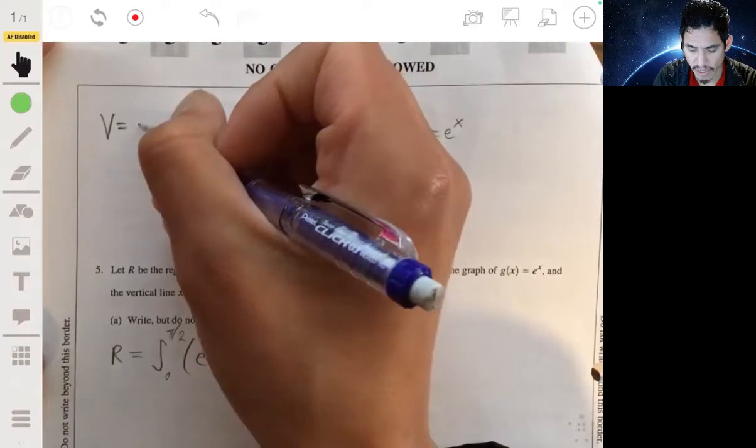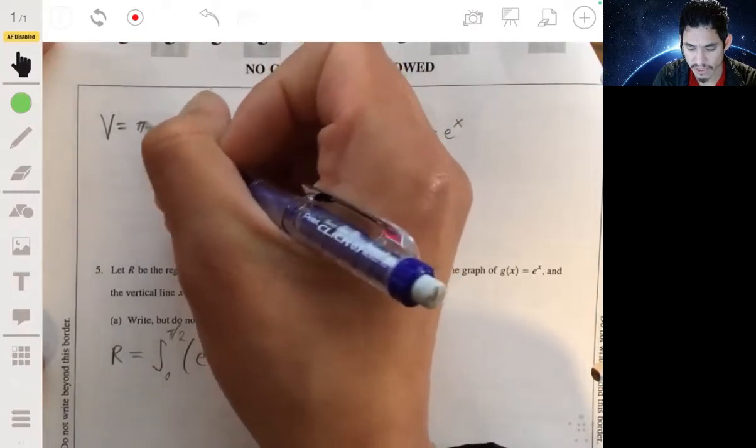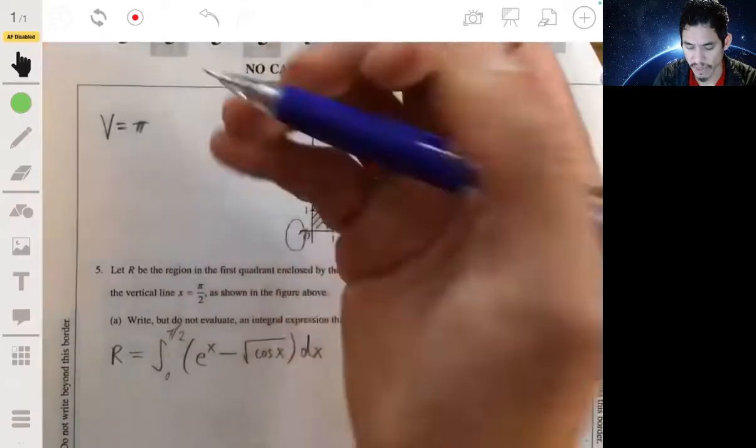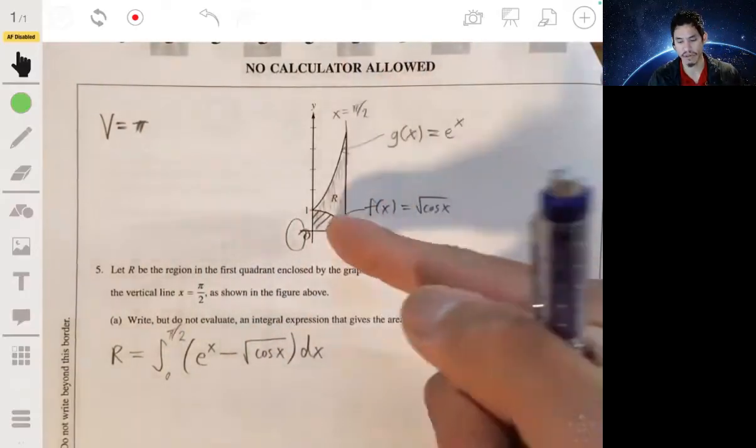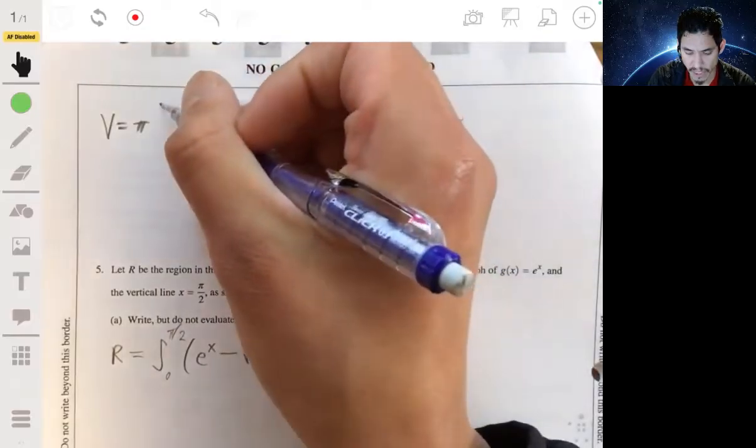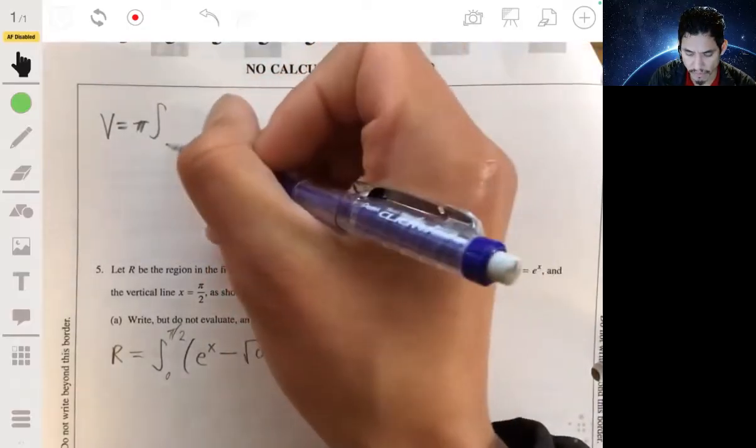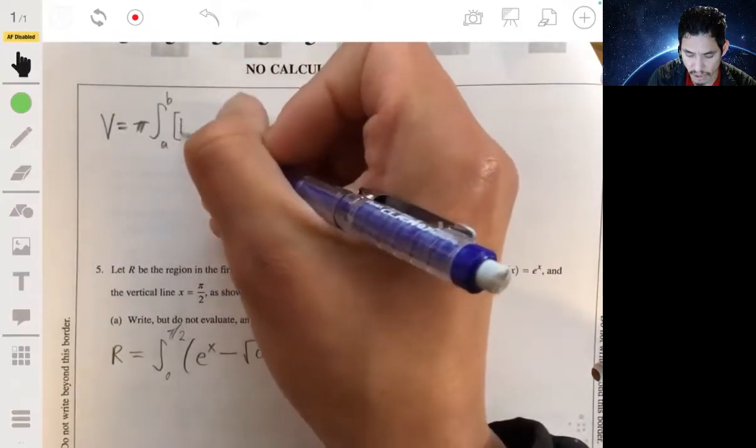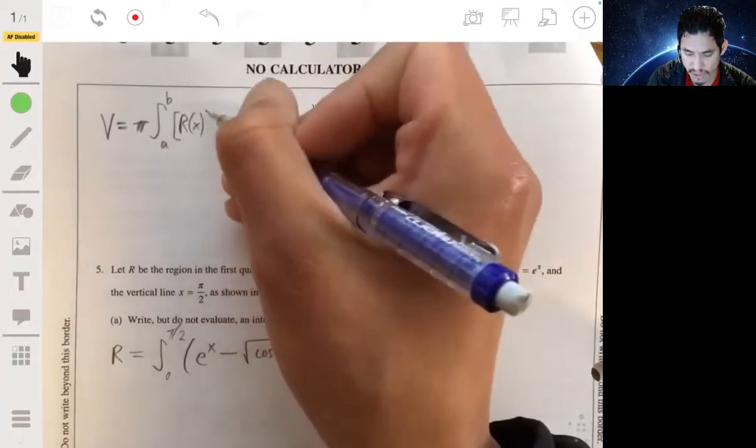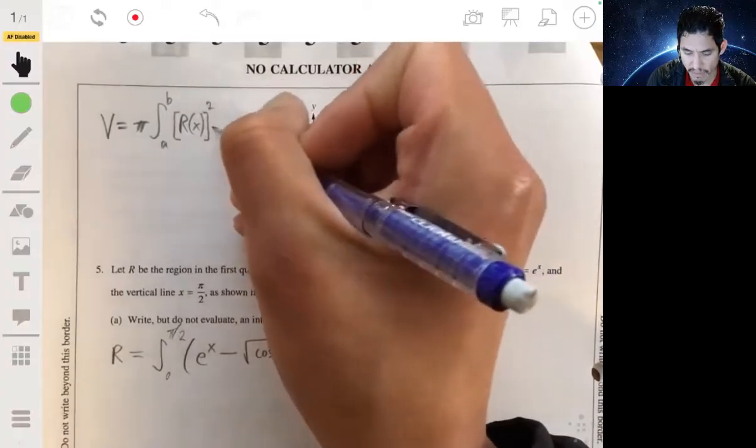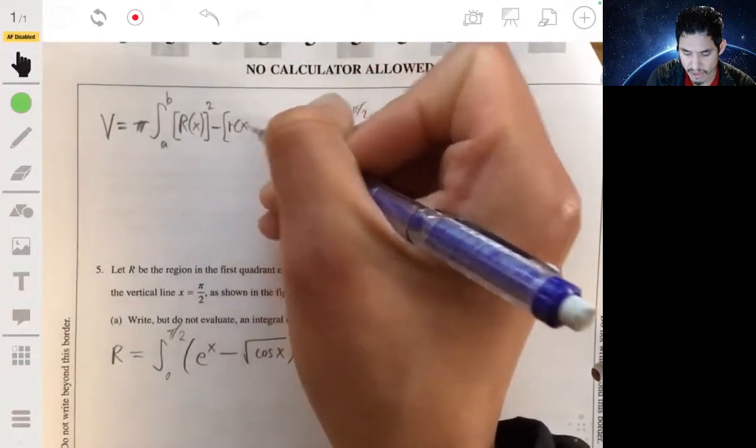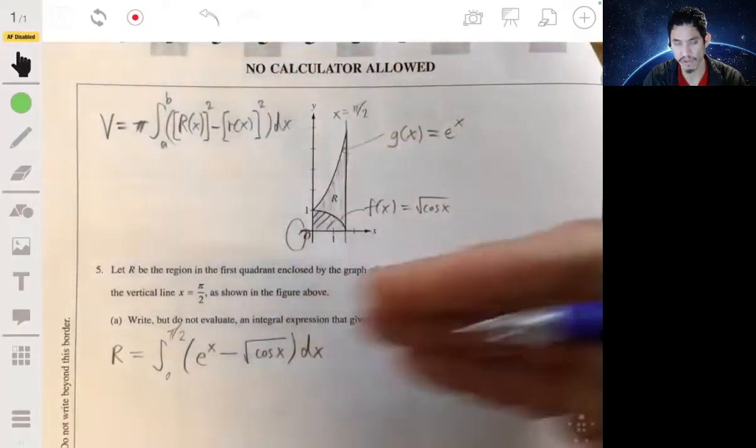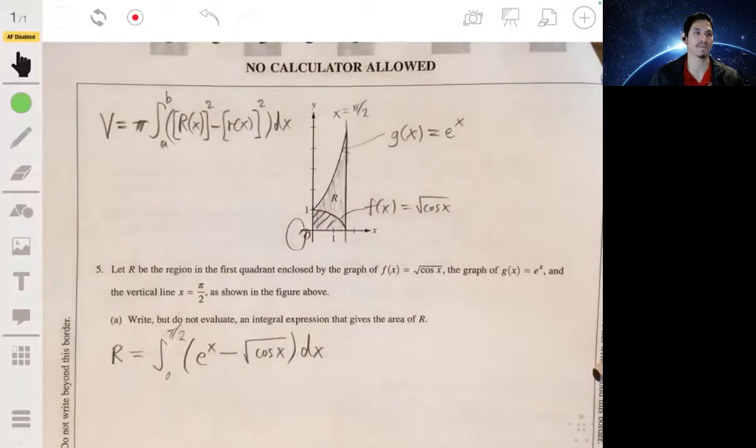Remember, that would be—essentially you're always going to create a cylinder. And for that, it'd be πr². But since this one has a hole, what we're going to do is take π integrated from a to b, and we set up a large radius expression squared minus a small radius expression.